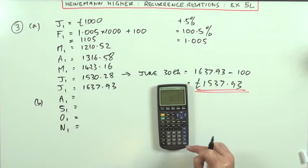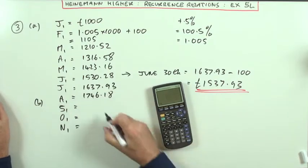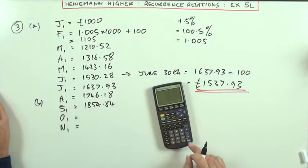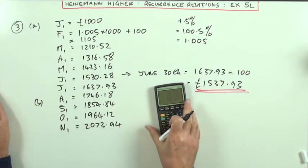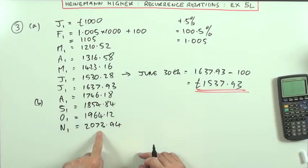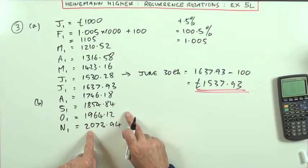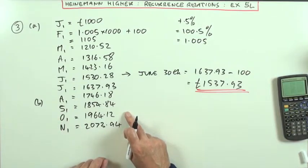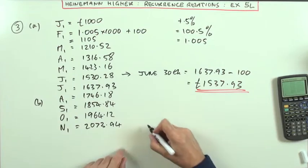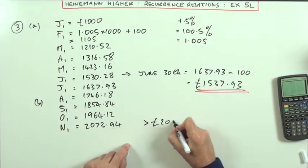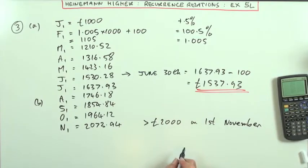But with other ones, I would just press the buttons and just count them and then state it. So, I've got. It goes up to 1746.18, 1854.84. Getting close. 1964.12. And finally, 2073.94. So, when did it first exceed the £2,000? You have to be careful because just because that goes over £2,000, it might have gone over the £2,000 at the end of the previous month. That means it could have happened on the 31st of October. But taking £100 off of that takes it under £2,000. So, it happened exactly on the 1st of November. So, it exceeded £2,000 on, it was greater than £2,000 on the 1st of November.